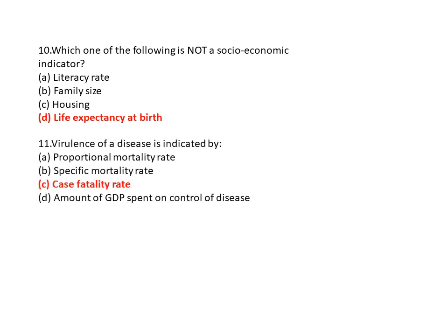Question 11: Virulence of disease is indicated by? Option A is proportional mortality rate, option B is specific mortality rate, option C is case fatality rate, and option D is amount of GDP spent on control of disease. So option C is the correct answer — case fatality rate.